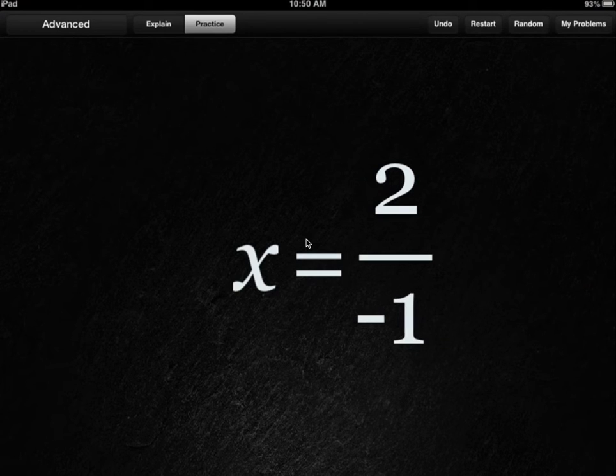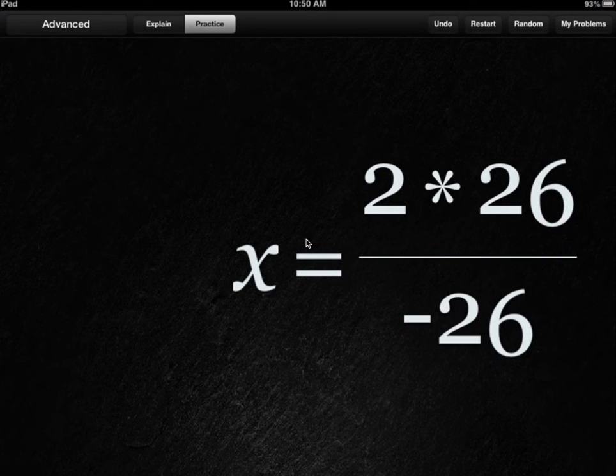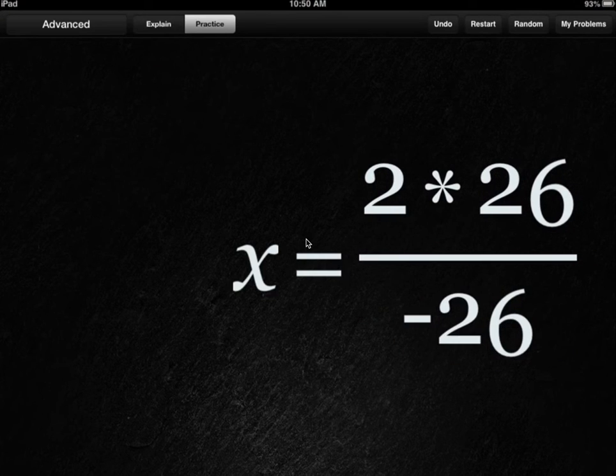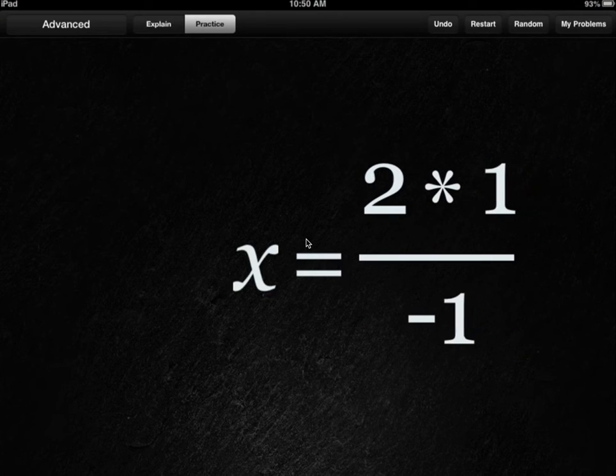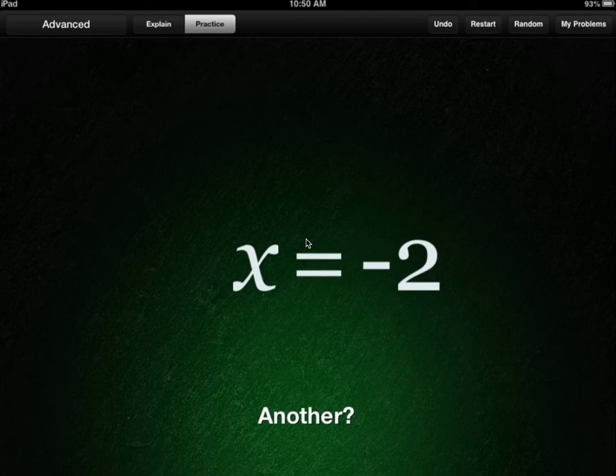And with this one here, I guess it's leaving it as two over negative one, or they want us to go back and maybe do something else, something that would have been a little bit easier for us to work with. There you go. And there you go. So I guess it wanted us to divide out that negative, that negative one to give us negative two. So really cool stuff.